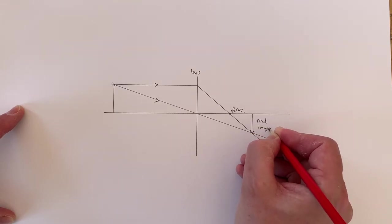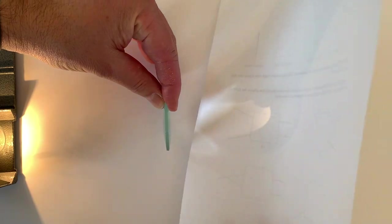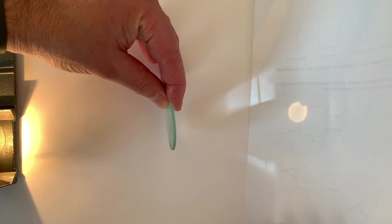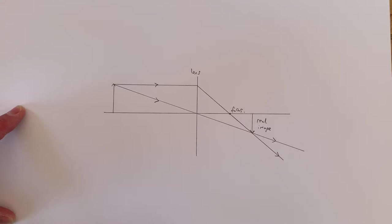A real image has the property that if you were to place a piece of paper at this point, you would actually see the image on the paper. You'll also notice that the image is upside down. It is inverted relative to the object. And also, in this case, it is slightly smaller.